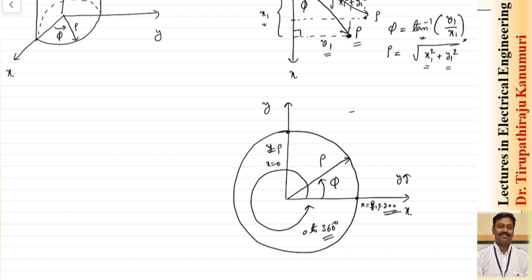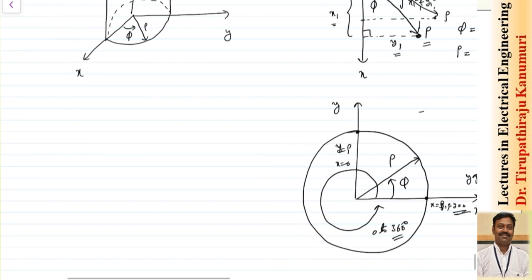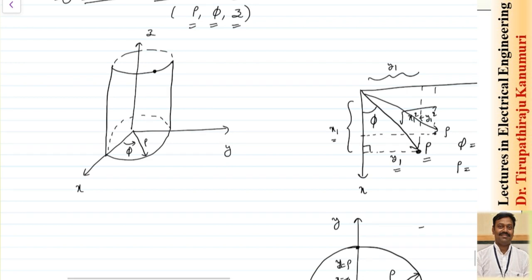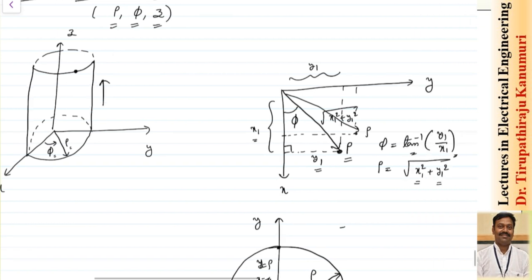Now assume I also vary the value of z. When z varies, the circle starts growing vertically upwards. You can see here the circle is extended in the direction of z. Along with x and y coordinates, we add z, and this gives us a cylinder. In this coordinate system, the cylinder is represented using rho, phi, and z.